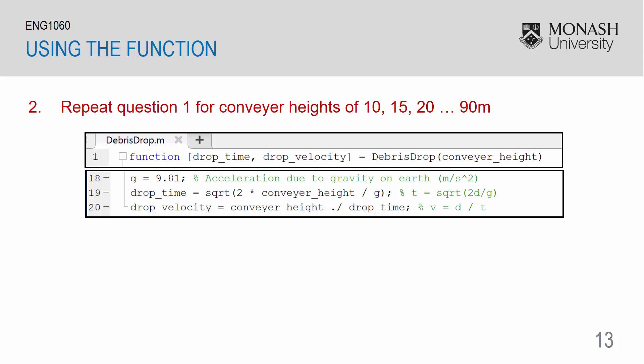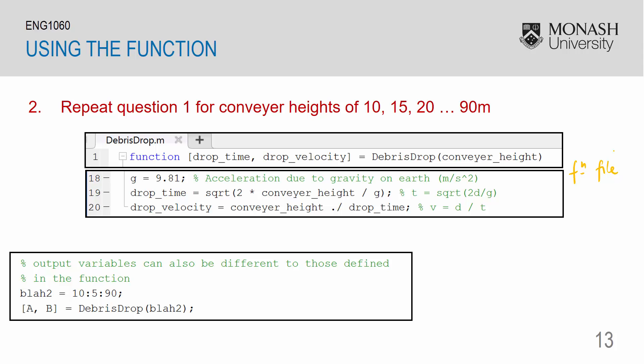Repeating question 1 for multiple values of conveyor heights can be done as follows. Here again we have the function header declaration, followed by the equations within the function file. I have my separate m-file, which contains the variable blah2. This is a vector from 10 to 90 with steps of 5 meters. And then I've called my function by specifying the two outputs, a, b, is equal to my function name, and then my input, which is blah2.